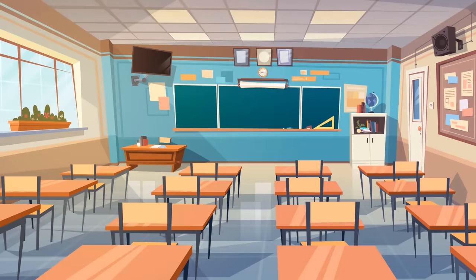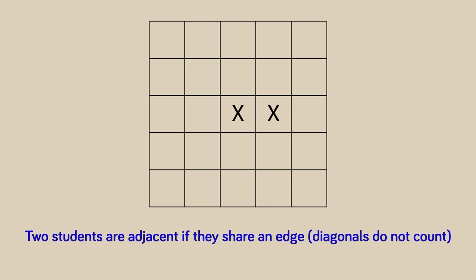Imagine a classroom of 25 students arranged in a 5x5 grid, where each student occupies a single one of these spaces. And as a quick definition, I need to add that two students are adjacent if they share an edge, as in diagonals do not count as adjacent. So these two students are adjacent since they share an edge, and same goes for these two, but these two are not, they're just diagonal.